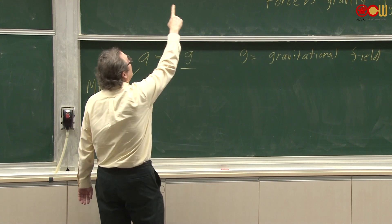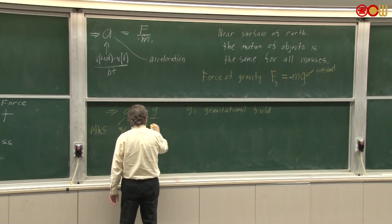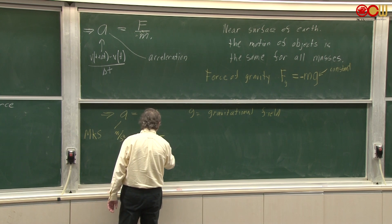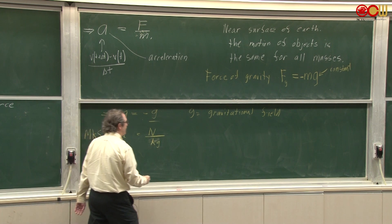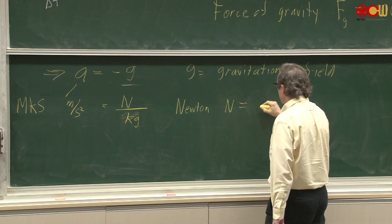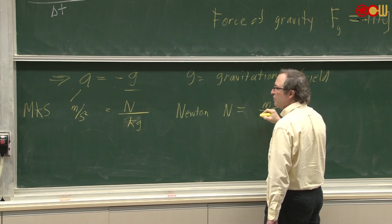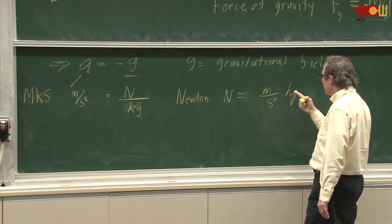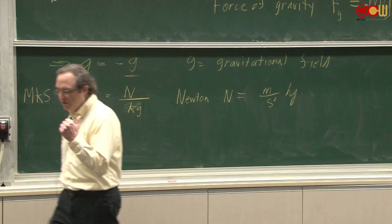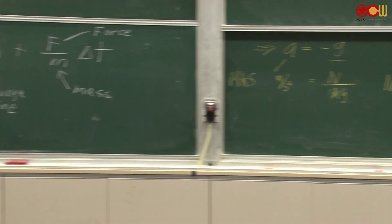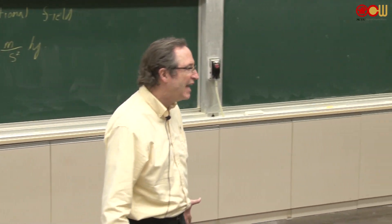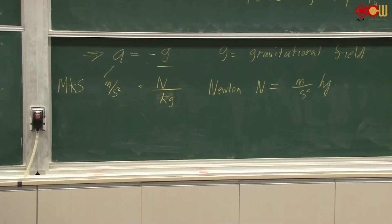If I look at g, g is F over m — that's newtons per kilogram. And we can see that a newton is just equal to kilograms times meters per second squared. So this is the MKS system. We now know the unit of acceleration, the unit of force, mass in kilograms, velocity in meters per second, and position in meters. That's if we measure everything in the MKS system.